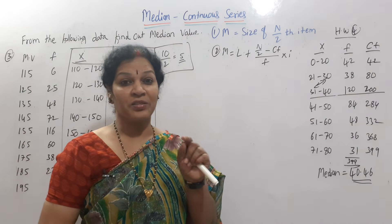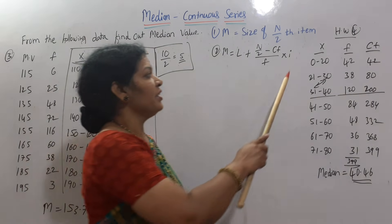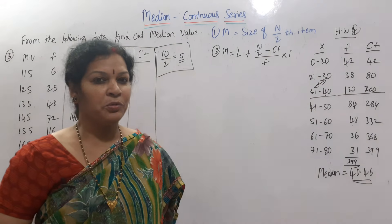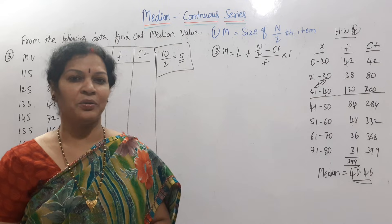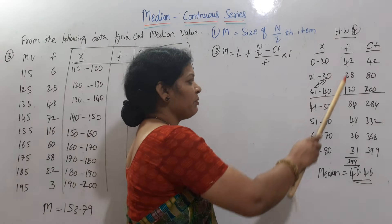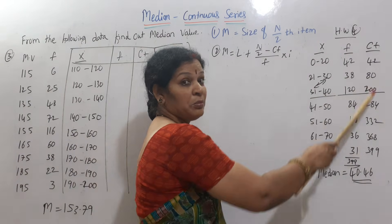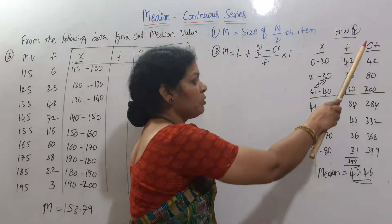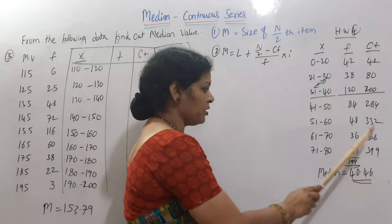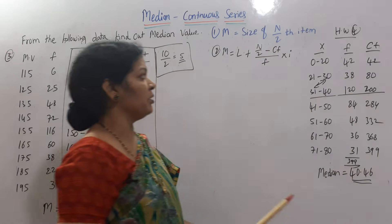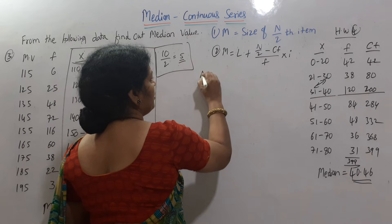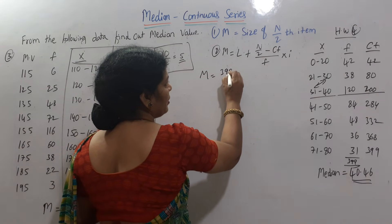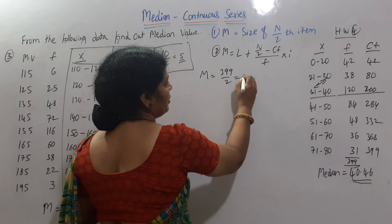The second problem: the class intervals are 0 to 20, 21 to 30, 31 to 40. First, n is the cumulative frequency. We have to find it. It is 399, so n is 399. We will use the first formula: m is equal to size of n by 2, so 399 by 2, that means the 199.5th item.